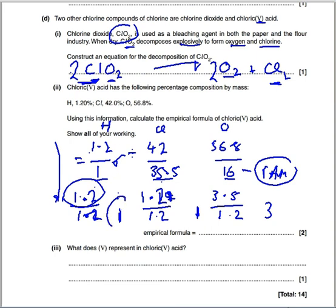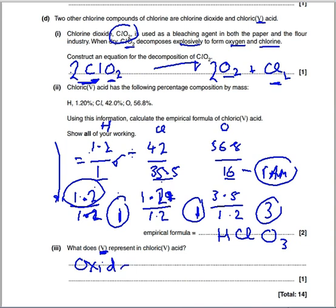Okay, so what does this little thing here, the five, represent in chloric(V) acid? This is the oxidation number of chlorine. Okie dokie, that's it. It's a very long question. I am on the hairline, but I really like it.